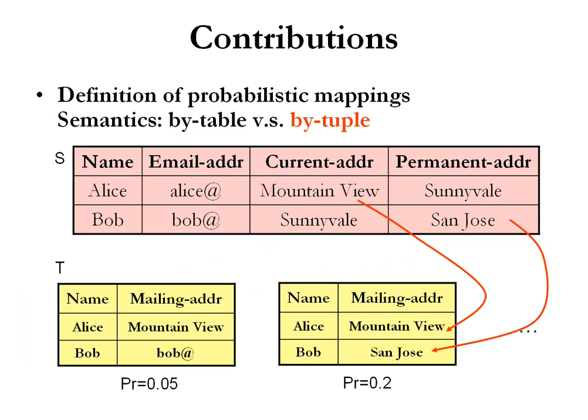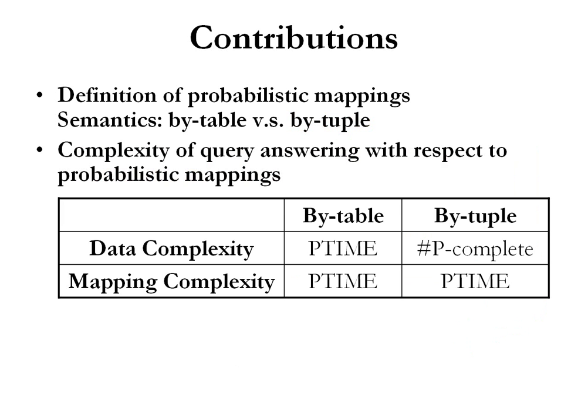For example, some people use their current address as mailing address and some people use their permanent address as mailing address. For both semantics, we studied query answering with respect to probabilistic mappings in terms of the size of the data and the size of the mapping. Whereas by-tuple query answering generally is hard, we identify several practical cases where query answering is in P-time in the size of the data.